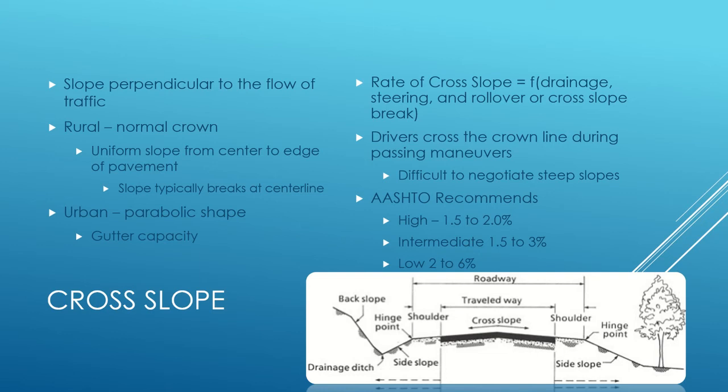There are standards for how much cross slope percentage is needed. AASHTO recommendations for a low-traffic cross slope are two to six percent; for a high-traffic cross slope, it's one and a half to two percent. The reason for that is also related to traffic speeds — on a lower-speed, low-traffic road, the cross slope can be steeper.